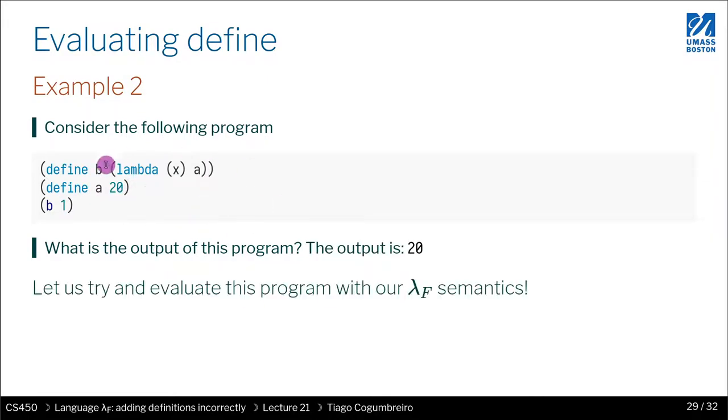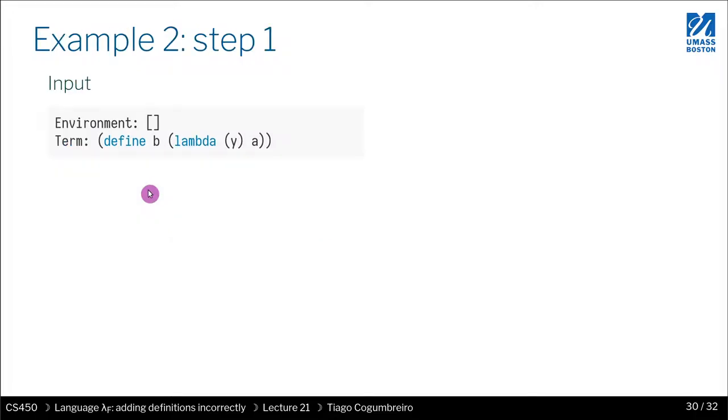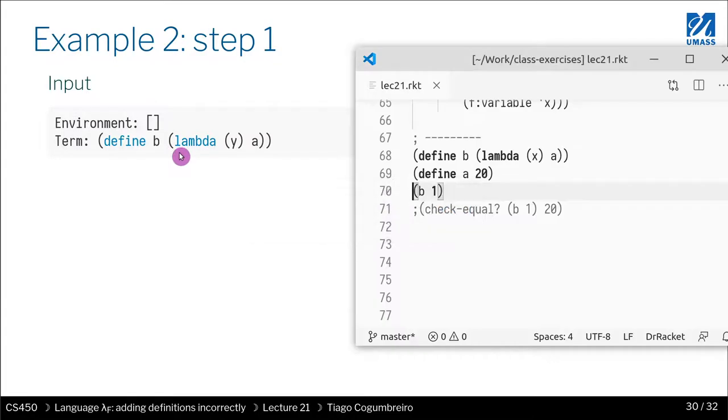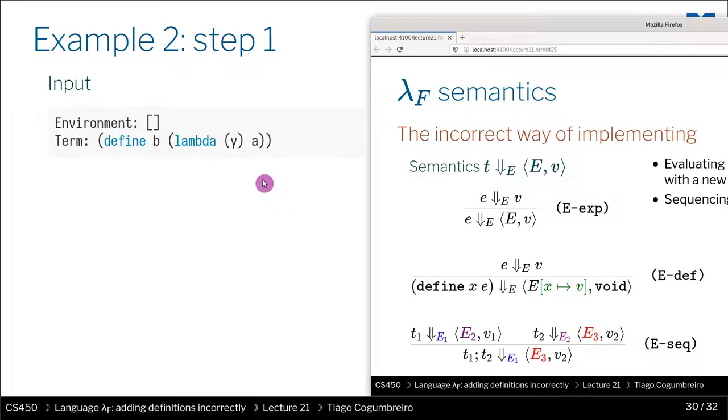So now let's try to evaluate the same program using our lambda F semantics. We start with the empty environment and we have to evaluate our function. We're going to apply this rule for define. We have a define and what is our expression is a lambda. And as we recall, in evaluating a lambda should return a closure that captures the environment that was used upon construction.